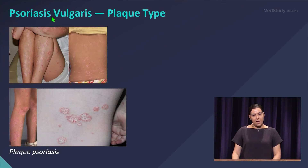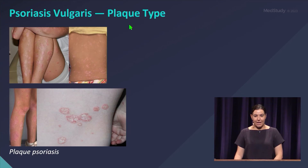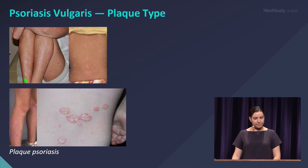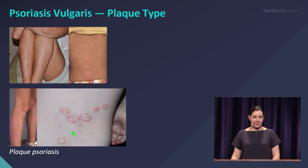This is psoriasis vulgaris, the more chronic plaque type, which is also seen in children. Here you see the classic lesions: well-demarcated pink plaques with silvery white scale, which is the classic clinical description.